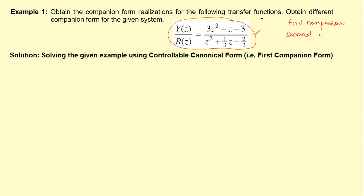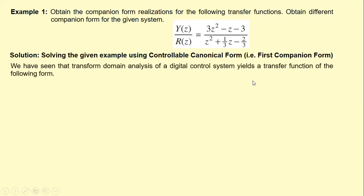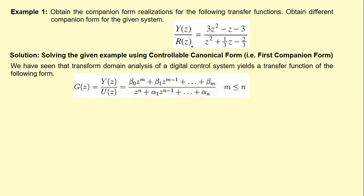We will solve the given example using the controllable canonical form. The transfer function of a linear time invariant discrete time system is given by a standard equation where m is the order of the numerator and n is the order of the denominator. In general, m is less than or equal to n; it shall not be greater than n. Let us call this equation number one.